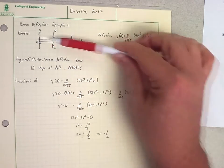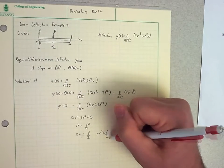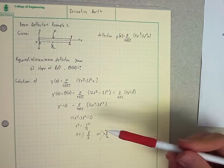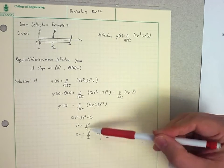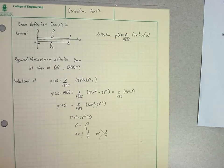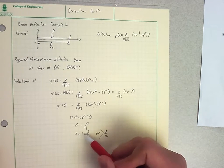Well, my beam goes from 0 to L. So negative L over 2 is somewhere over here. That's not really on my beam, it's somewhere off of my beam. So not surprisingly, with the force being applied in the middle, my maximum deflection seems to occur at L over 2. So yeah, that's what we'd expect.